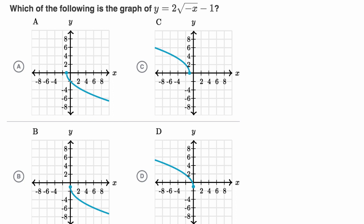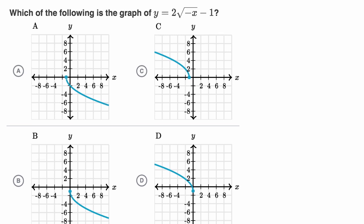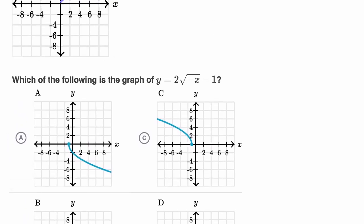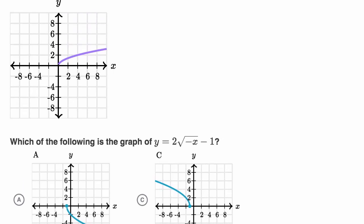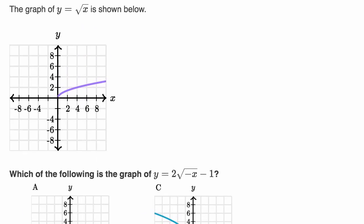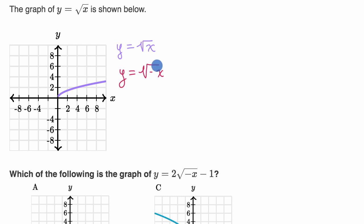Now let's work through this together. The way I'm going to do it is I'm actually going to try to draw what the graph of two times the square root of negative x minus one should look like, and then I'll just look at which of the choices is closest to what I drew. I'm going to do it step by step. We already see what y equals square root of x looks like, but let's build up. Let's figure out what the graph of y equals square root of negative x would look like. Whatever was happening at a certain value of x will now happen at the negative of that value of x.